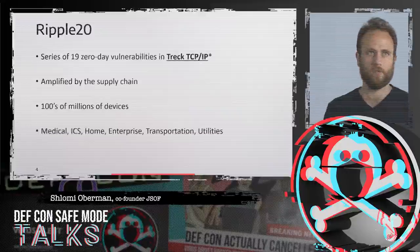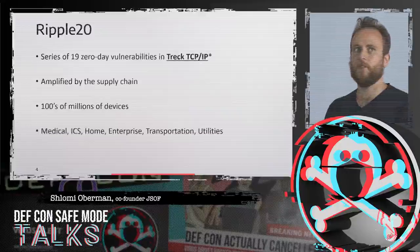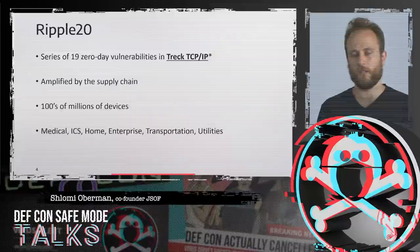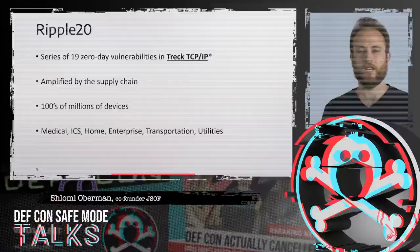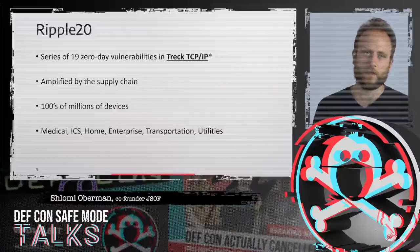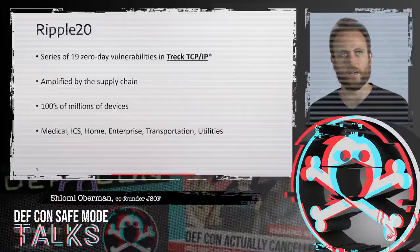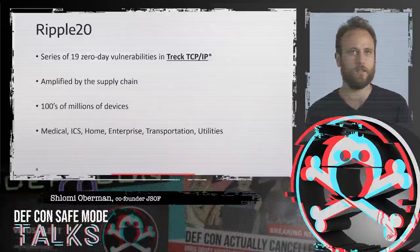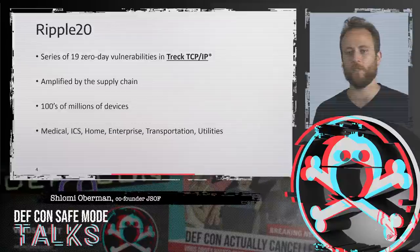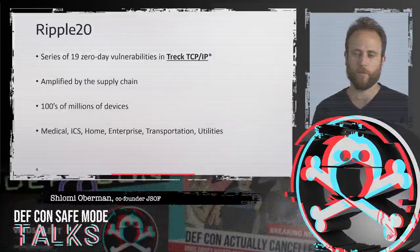So, what is Ripple20? Ripple20 is a series of 19 zero-day vulnerabilities in a TCP/IP stack called Trek TCP/IP. We say 19 zero-day vulnerabilities, but it sort of depends how you count. There are quite a few more discrete bugs in these 19 vulnerabilities, and two of the vulnerabilities were reported anonymously at the same time as we reported.